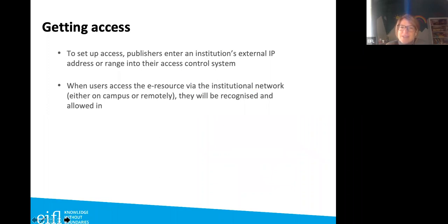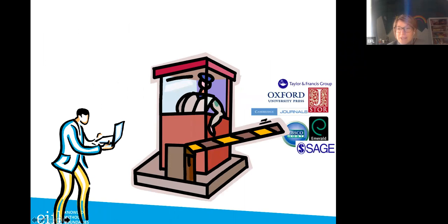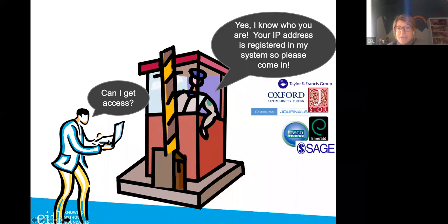To set up access, the publisher enters the IP address into their access control system. When somebody from that institution's IP address visits the publisher's website, the publisher recognizes them and lets them in. It's a verification based on the IP address. A link will be shared to check your IP — if you check it several days in a row and get the same answer, that's your static IP.